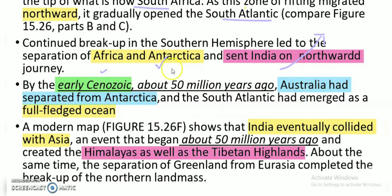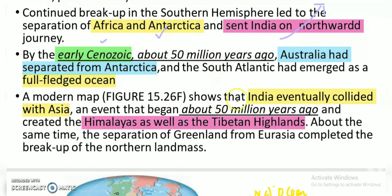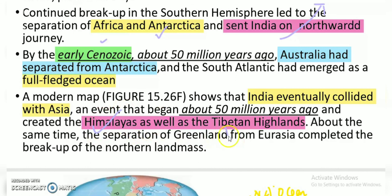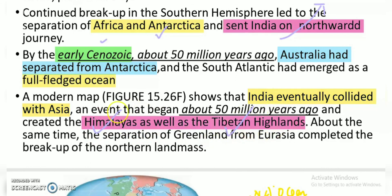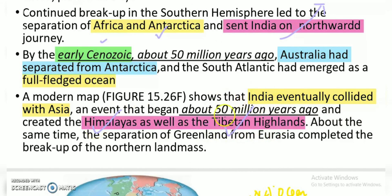The South Atlantic had emerged as a full-fledged ocean. Then, looking at the modern map, India collided with Asia, resulting in the formation of the Himalayas as well as the Tibetan Plateau. Tibet is part of China and the Himalayas are part of India — all part of the process that occurred around 50 million years ago.